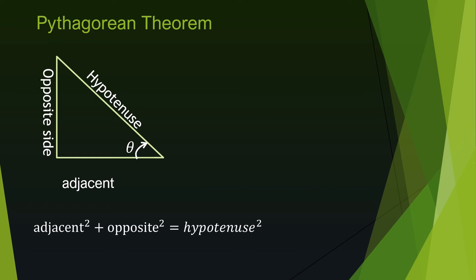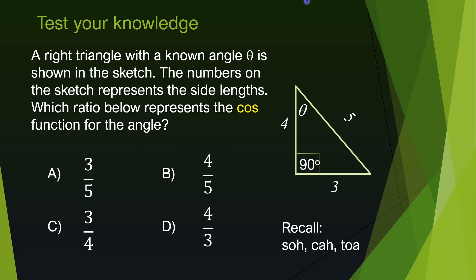There is another equation that relates the three sides of a right triangle — it is called the Pythagorean theorem. According to this theorem, the sum of the squares of the adjacent and opposite sides equals the square of the hypotenuse. In other words, the square of the longest side equals the sum of the squares of the remaining two sides.